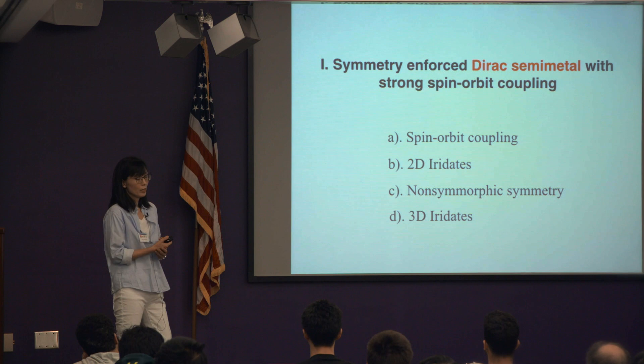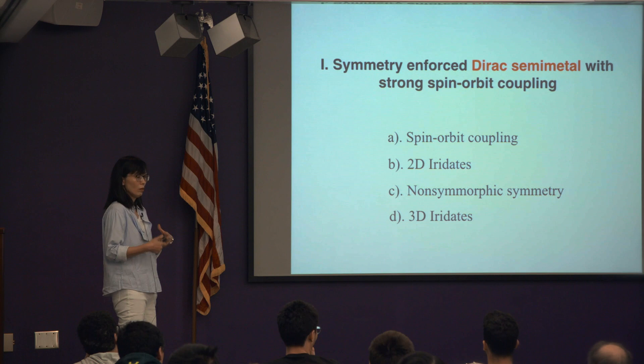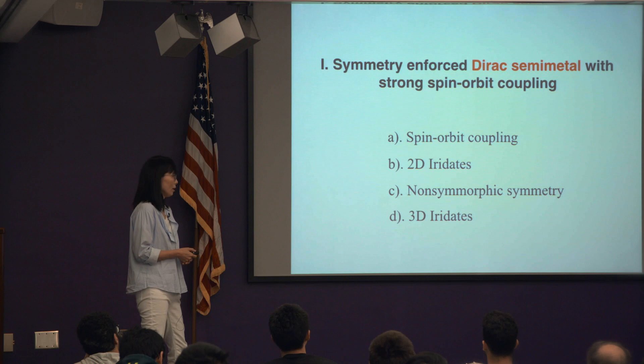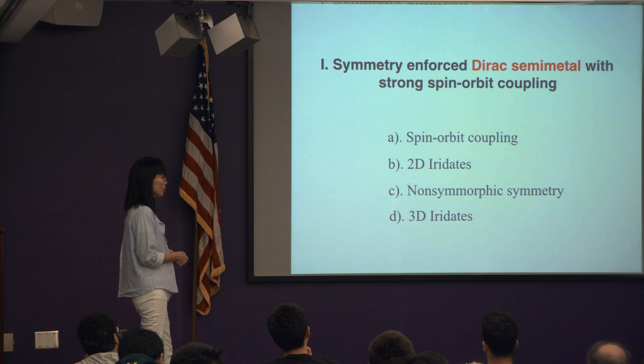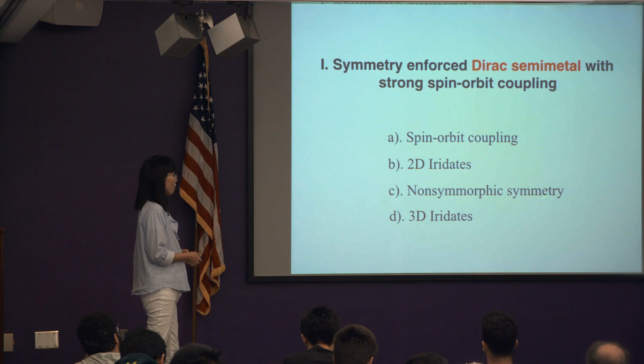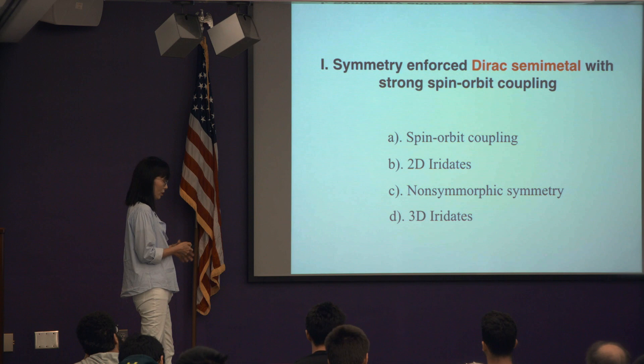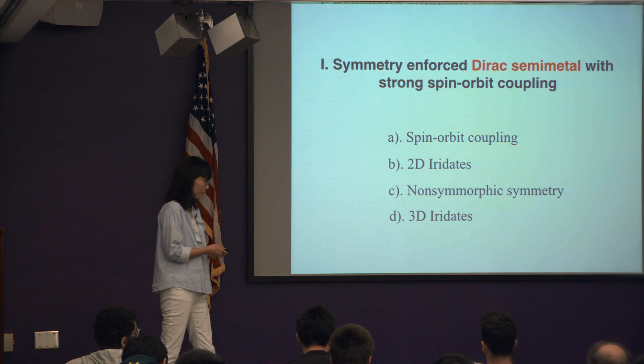These are the references where you can find most of what I said. In particular, this 2016 review article contains most of what I say in the second part, and the first part will be found in the PRL papers and Nature Communications. So: symmetry-enforced Dirac semi-metals with strong spin-orbit coupling. Given that this is a lecture for students, I'll remind you of spin-orbit coupling from quantum mechanics, then move to 2D systems. What's important are non-symmorphic symmetries, which I'll introduce, and then we'll move to the 3D case where the Fermi surface becomes a ring with Dirac or linear dispersion.